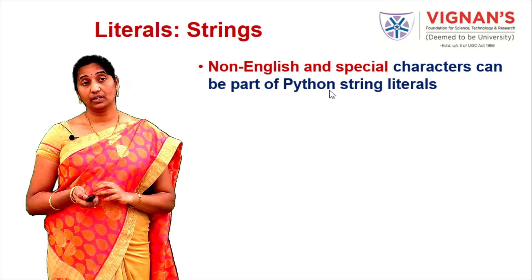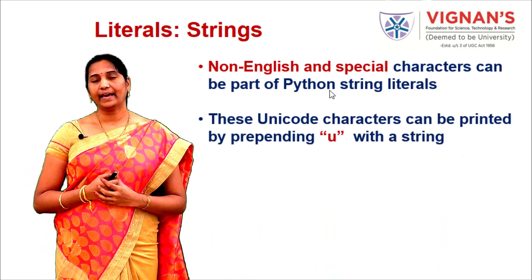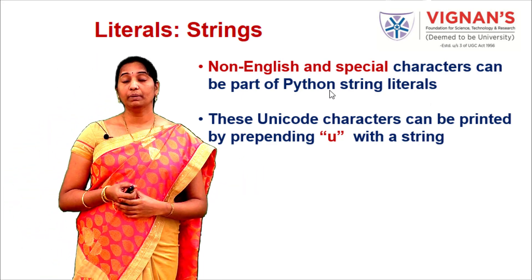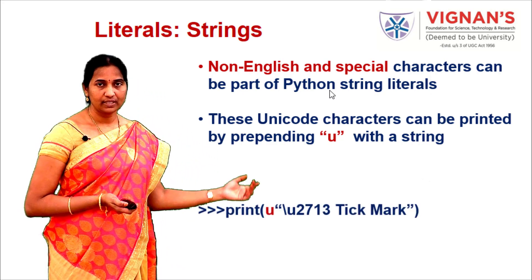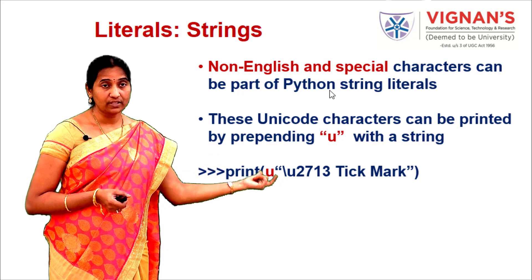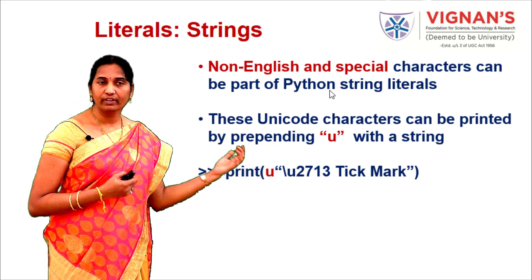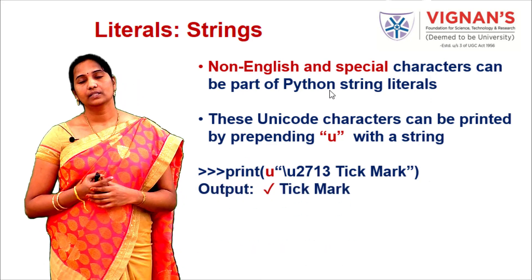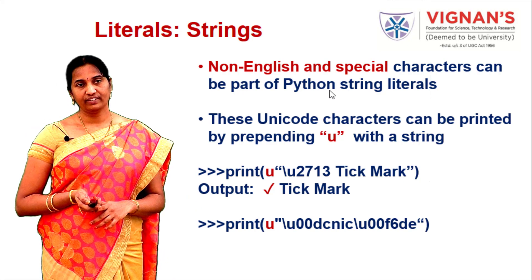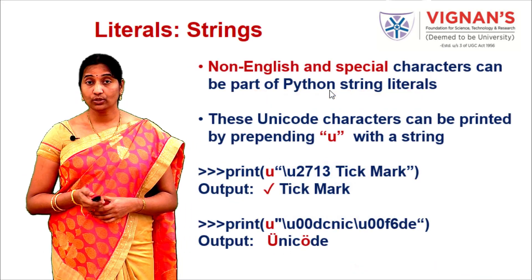Python supports non-English and special characters as part of string literals using unicode. Unicode characters are used to represent individual characters and can be printed by prepending u to the string. For example, prepending u causes unicode sequences indicated by \u to be treated as unicode characters — such as a tick mark symbol. A string with multiple unicode sequences displays as a string of special symbols.